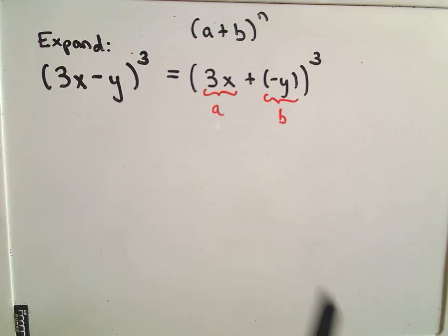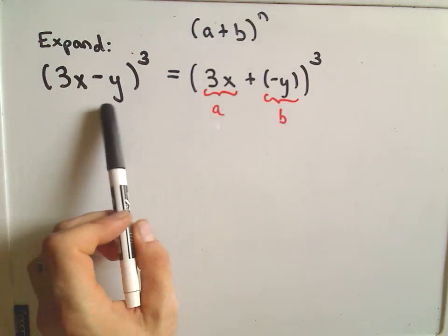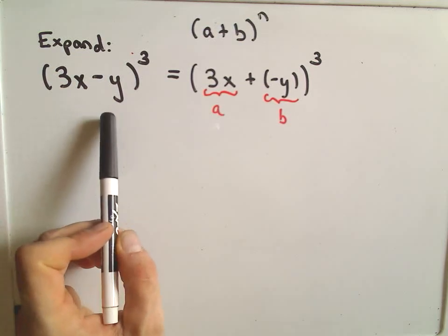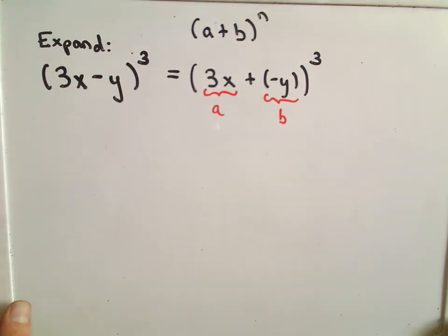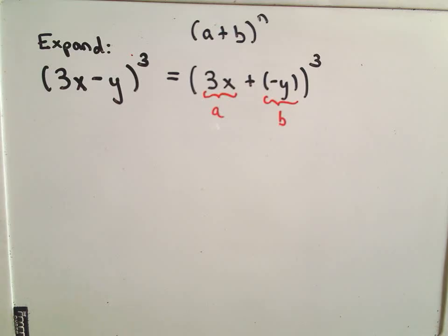Again, the binomial theorem might be a little overkill. I would probably just multiply this one out the long way. I think it would be easier than using the binomial theorem. But obviously we're just trying to emphasize the process here more than anything.